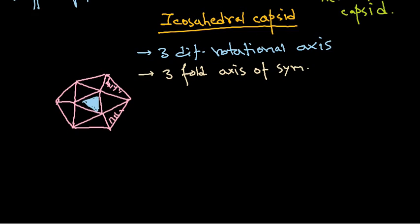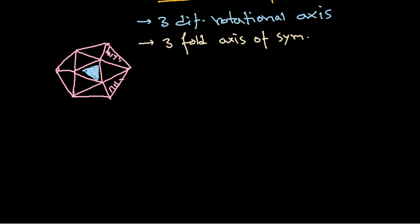Now let me draw another picture for the same structure from a different angle. If I just rotate this and view it from the top — try to understand this concept very carefully. If I am looking straight from the top where you are seeing the screen, you can find the 3-fold symmetry from that view. The top view gives a symmetrical structure with three lines visible.